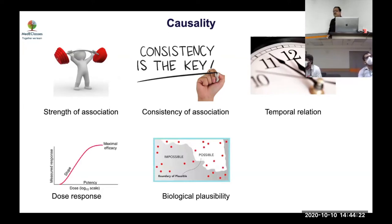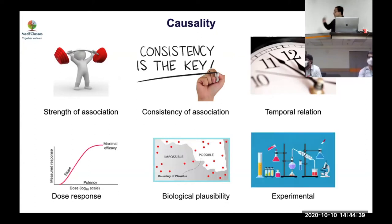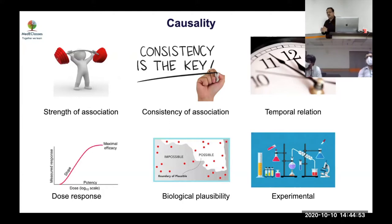Fifth, the relationship must be biologically plausible — saying osteoarthritis of the leg causes Alzheimer's may show association but lacks biological plausibility. Finally, the ultimate criterion is an experiment — randomization. Causality is important because all interventions depend on it, not association, and proper randomization is required to assess it.